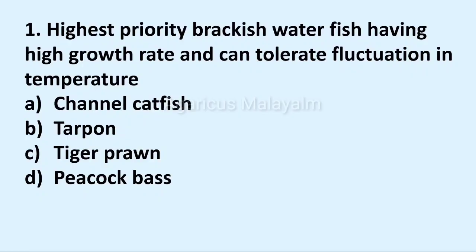First question: the highest priority brackish water fish having high growth rate and can tolerate fluctuation in temperature. Answer options: option A, channel catfish; option B, tarpon; option C, tiger prawn; option D, peacock bass. Correct answer: option C, tiger prawn.